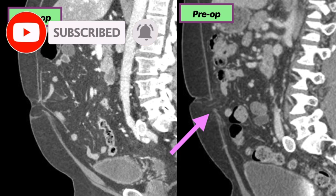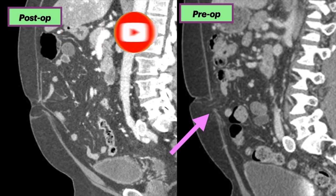Preoperatively, the patient had a three centimeter hernia causing increasing daily pain. Note the absence of the mesh repair on the preoperative image.